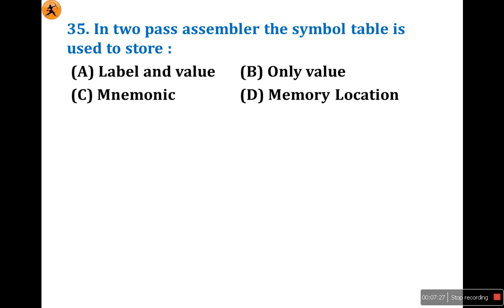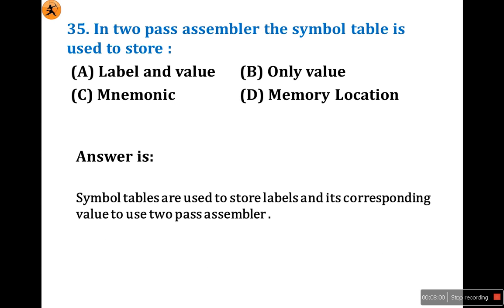In a two-pass assembler, the symbol table is used to store — the same type of question asked three times in different ways. The symbol table is used to store labels and their values, to be used in the second pass. So the answer is A.